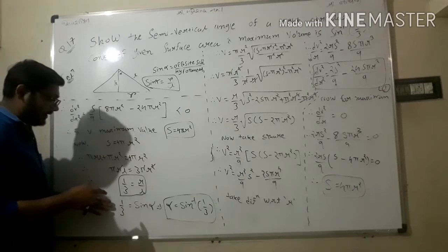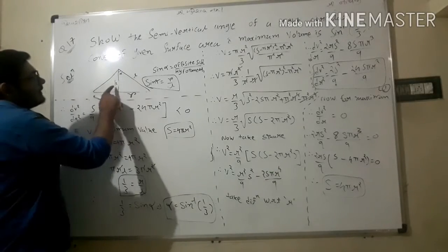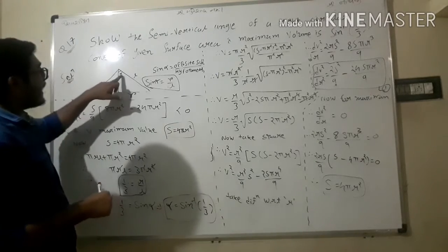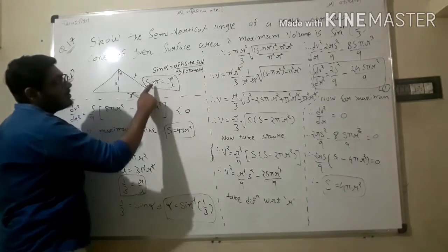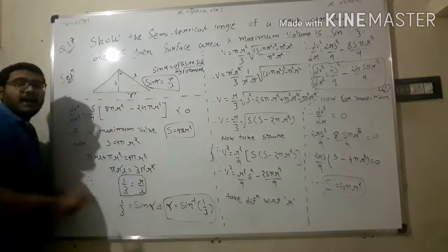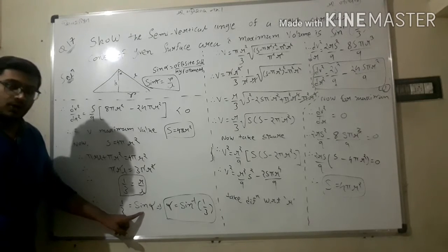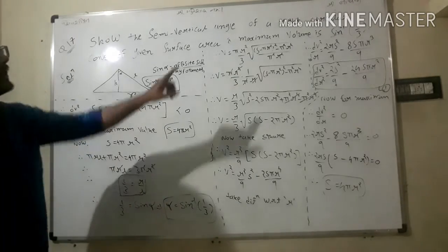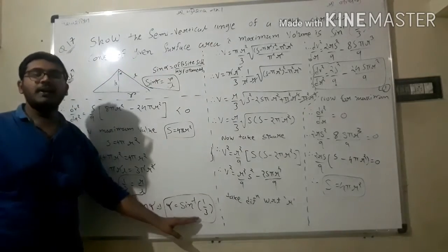Now from our diagram, with alpha as the semi-vertical angle, sine alpha = opposite side / hypotenuse = r/l. We have just shown r/l = 1/3. Therefore sin α = 1/3, which gives α = sin⁻¹(1/3). This is our required solution — the semi-vertical angle for maximum volume is sin⁻¹(1/3), which is what we had to prove.